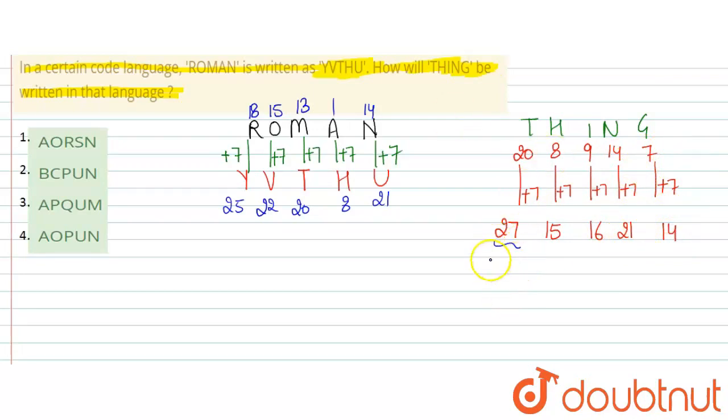Now, 27 means 26 plus 1. Since Z is 26, this wraps around to A. Then 15 is O, 16 is P, 21 is U, and 14 is N. So the answer is AOPUN.